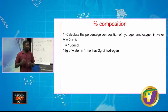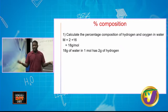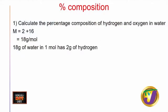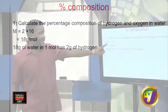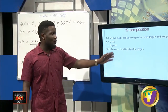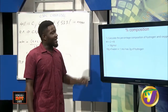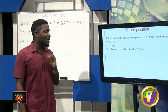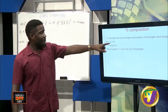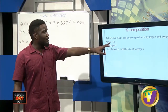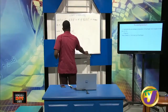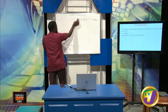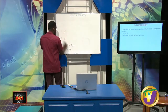For water H₂O: the molar mass is (2×1) + 16 = 18 g/mol. So 18 g/mol tells us there are 18 grams in one mole of water. Out of those 18 grams, hydrogen contributes 2 grams and oxygen contributes 16 grams. We plug those values into our formula to find the percentage composition for each element.